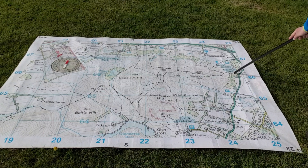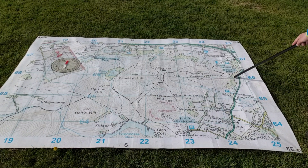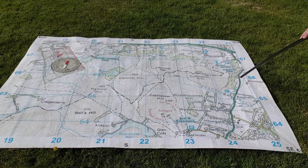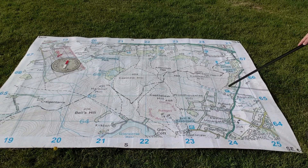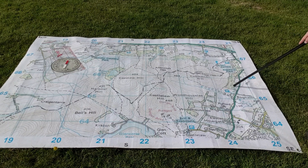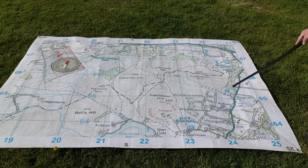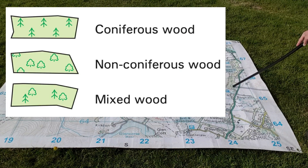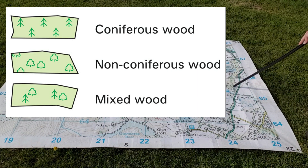Trees and forestry are marked by colour — a self-explanatory colour. Green areas here are forestry, but there's a tree symbol inside that which tells you whether it's a coniferous or a deciduous forest, or a mix of both.